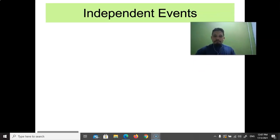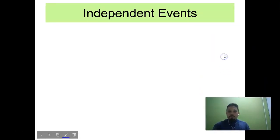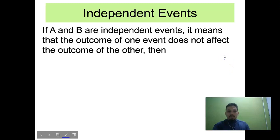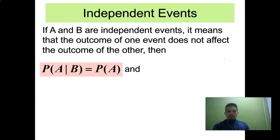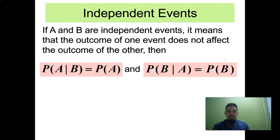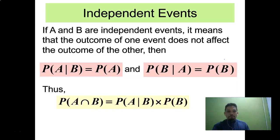Independent events: if A and B are independent, the outcome of one does not affect the outcome of the other. Then probability of A given B equals probability of A, and probability of B given A equals probability of B. Therefore probability of A intersect B simply equals probability of A times probability of B.